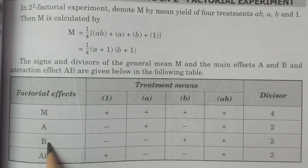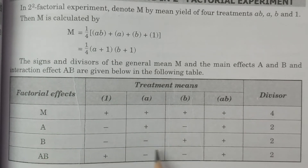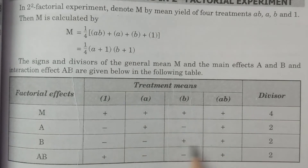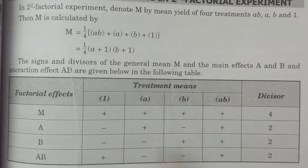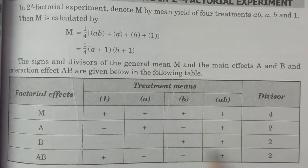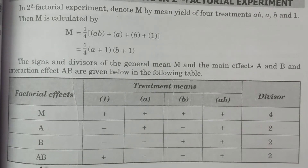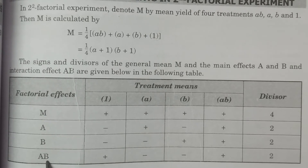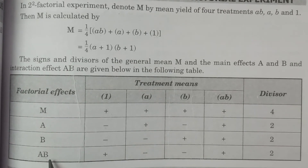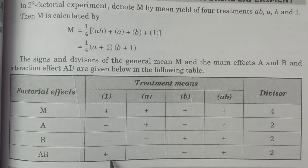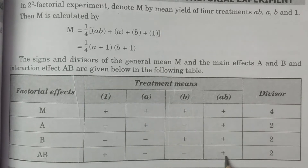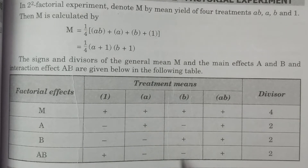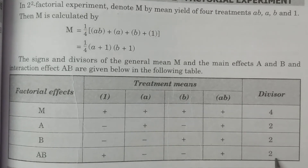For main effect B, the signs of b and ab are positive, while 1 and a are negative, and the divisor is 2. For interaction effect AB, 1 and ab are positive, while a and b have negative signs, and the divisor is 2.